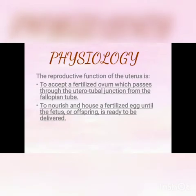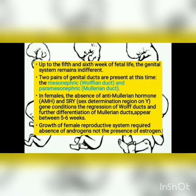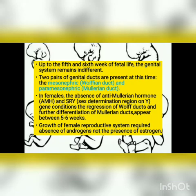Now the main topic is embryogenesis — you need to know how the uterus, cervix, and vagina develop to understand Mullerian duct abnormalities. Up to the fifth to sixth week of fetal life, the genital system remains indifferent. There are two ducts: the mesonephric duct, also called the Wolffian duct, and the paramesonephric duct, also called the Mullerian duct. In females, the absence of anti-Mullerian hormone and the sex-determining region of Y causes regression of the Wolffian duct and further differentiation of the Mullerian duct.